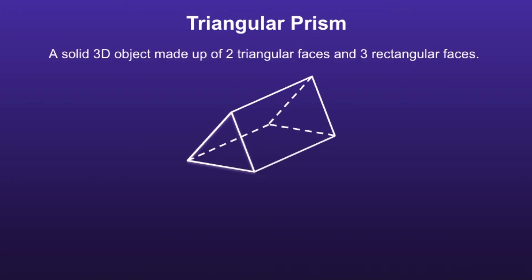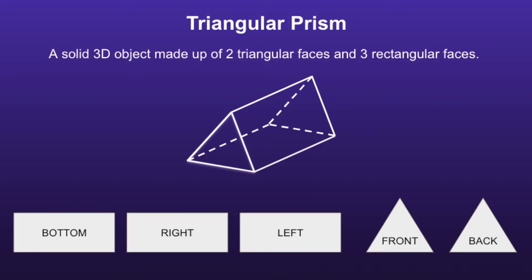Triangular Prism: a solid 3D object made up of two triangular faces and three rectangular faces. If we look at the picture, we can see that the bottom, right, and left faces are rectangular faces, and the front and back faces are the triangular faces.